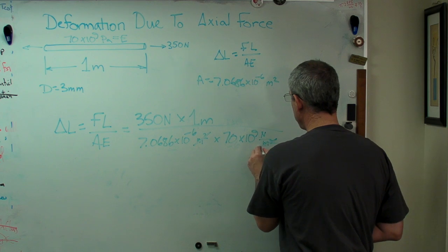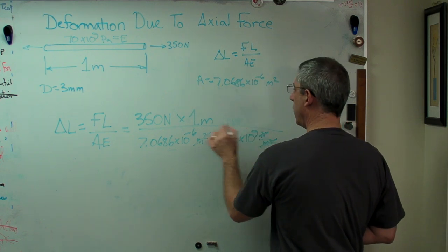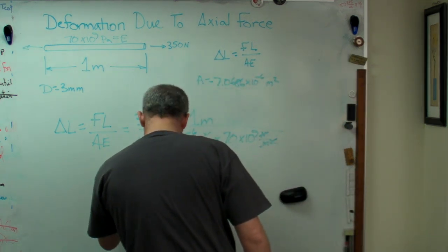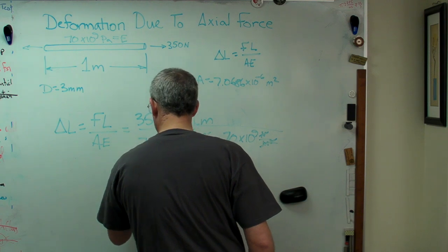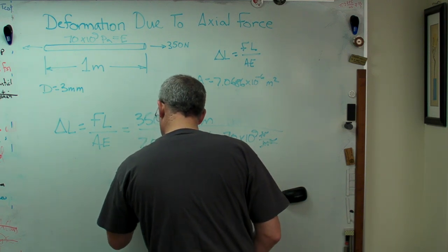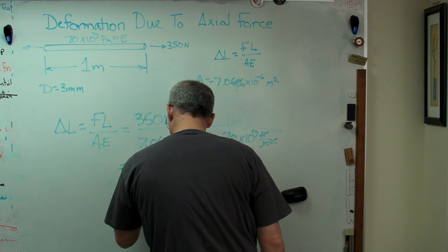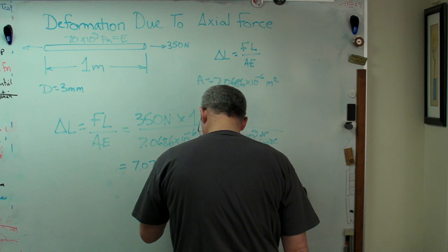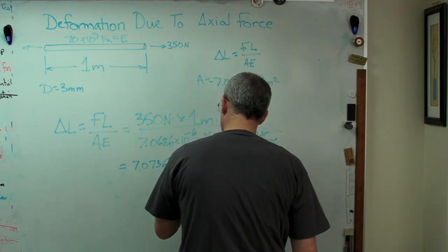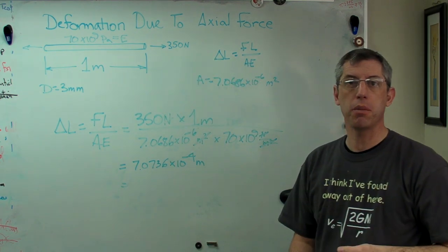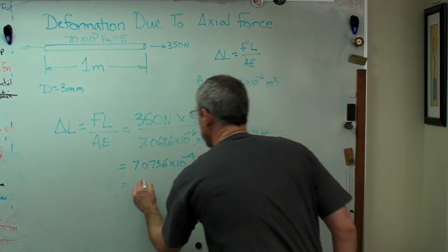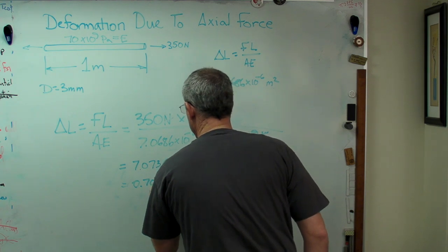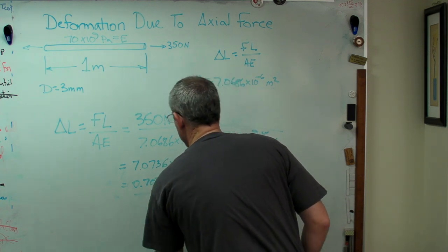Meters squared cancel with meters squared; newtons cancel with newtons, leaving meters — which is exactly what we want. Working this out, you get 7.0736 × 10⁻⁴ meters. That's about 0.7 millimeters — I'll call it 0.707 millimeters. Close enough.